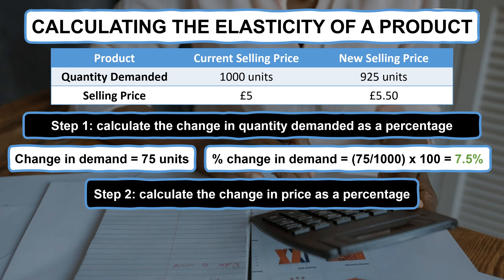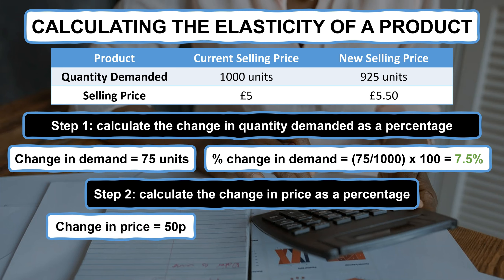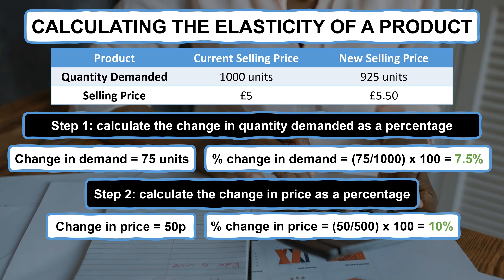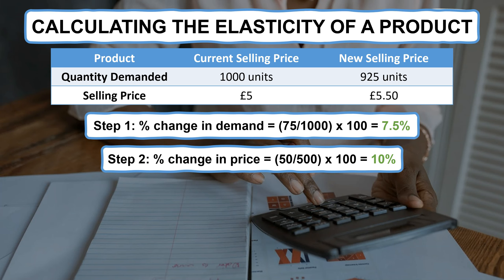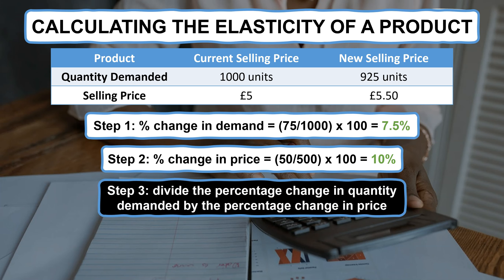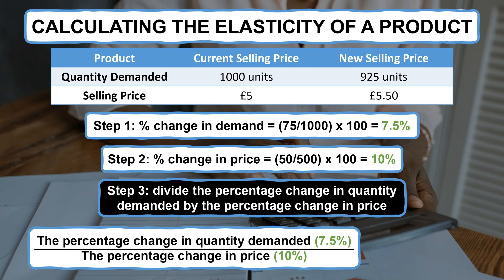Step 2 is to calculate the change in price as a percentage. The current price is £5 and the proposed change is to £5.50 — a difference of 50p. Divide 50p by £5 and multiply by 100 — the percentage change in price is 10%. Now, with the percentage change in demand and percentage change in price calculated, we move to the third and final step: use the elasticity formula, dividing the percentage change in quantity (7.5%) by the percentage change in price (10%), equalling 0.75, represented as minus 0.75. Therefore, the price is inelastic as the number is below 1 and the percentage change in demand is less than the percentage change in price.